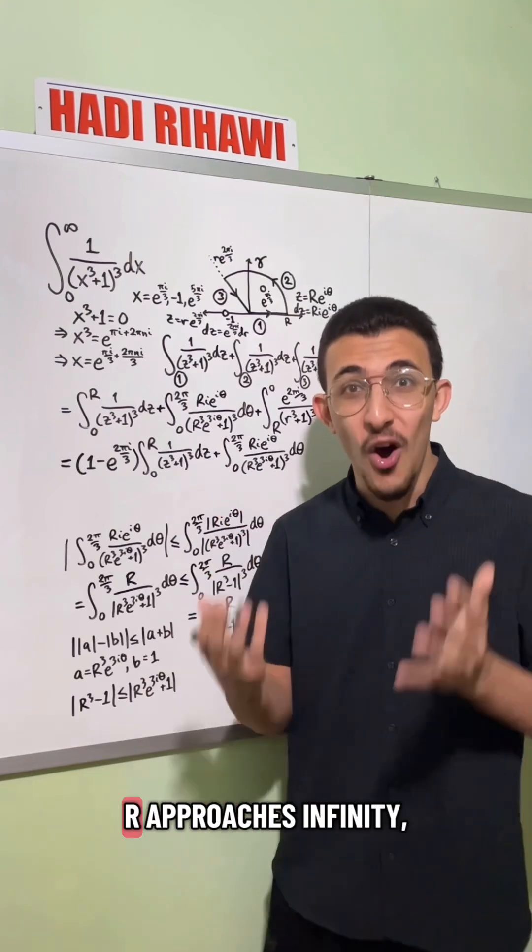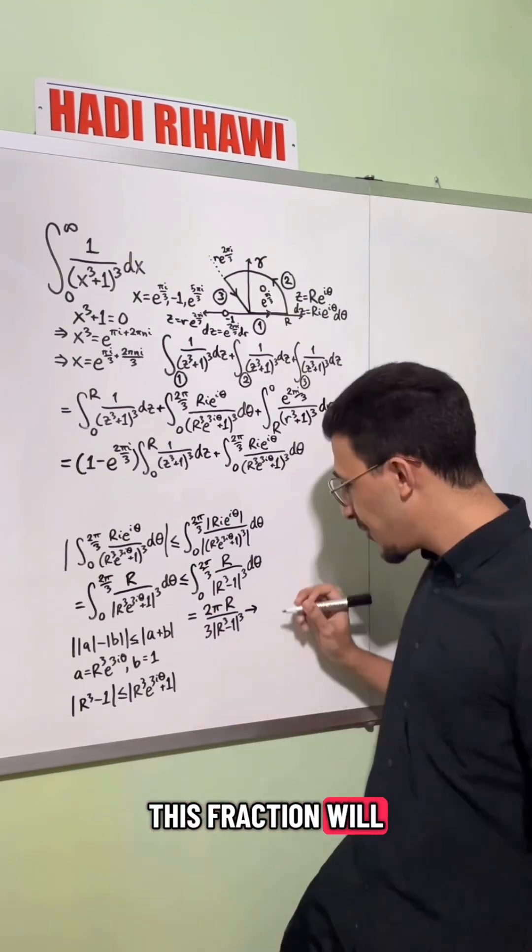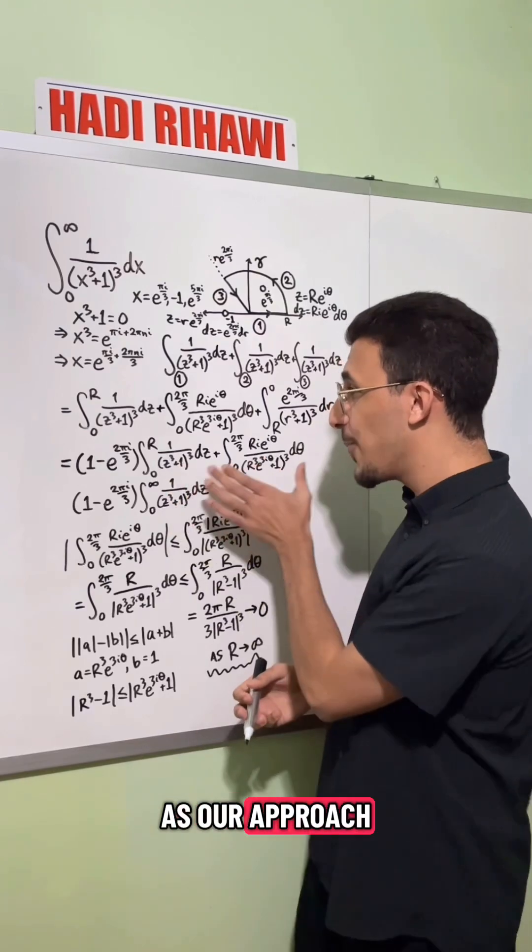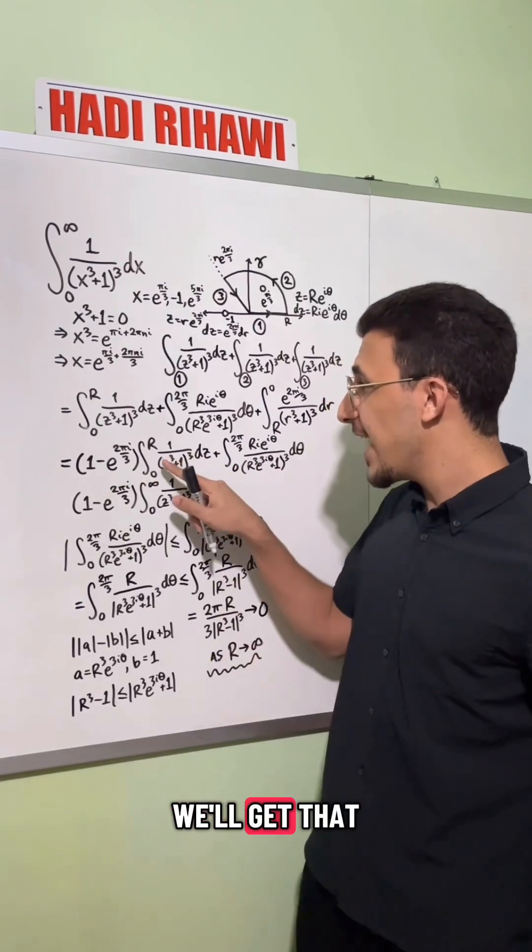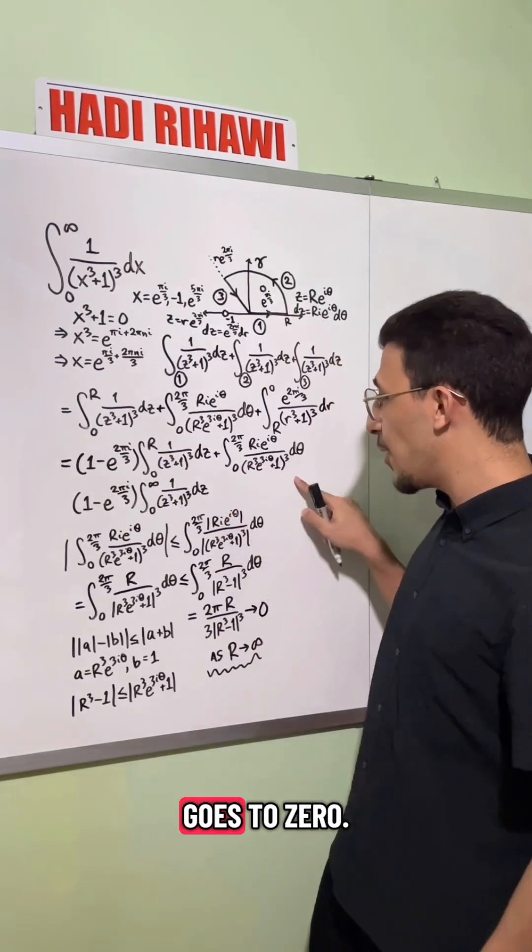And finally, we note that as r approaches infinity, this fraction will approach zero. So we'll see if we take a limit as r approaches infinity up here, we'll get that this goes to infinity and then this goes to zero.